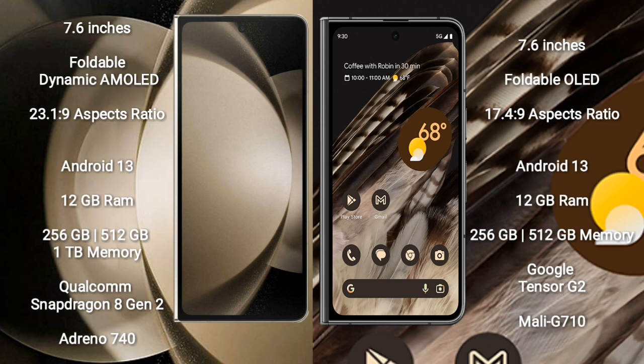Samsung Galaxy Z Fold 5 runs on the Android 13 operating system. Google Pixel Fold also runs on the Android 13 operating system. Samsung Galaxy Z Fold 5 comes with 12GB RAM and 256GB or 512GB or 1TB internal storage, Qualcomm Snapdragon 8 Gen 2 processor.